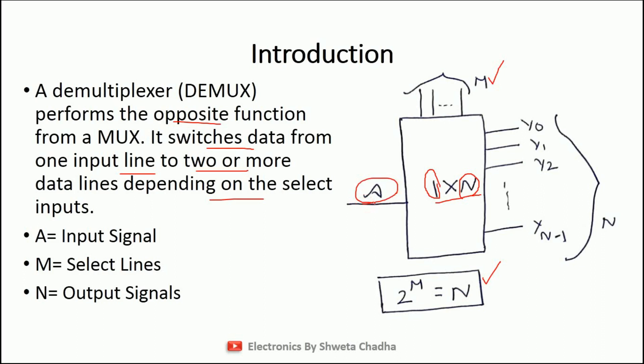As you can see, in the last video N was equal to the number of input signals because that was N×1. So that is the only difference between multiplexer and demultiplexer block diagrams.